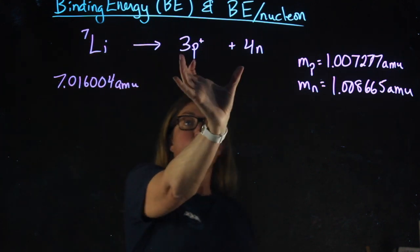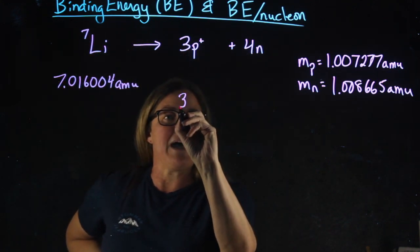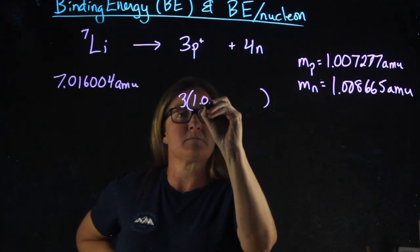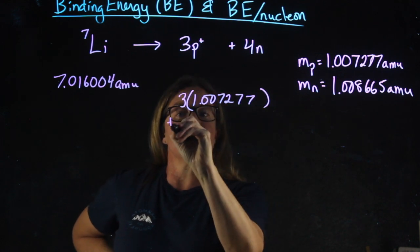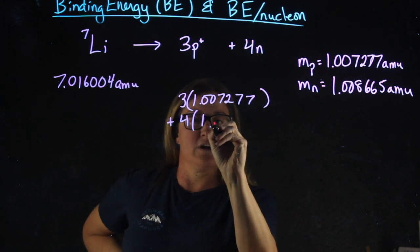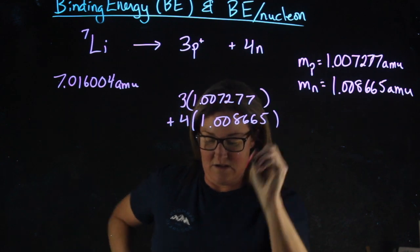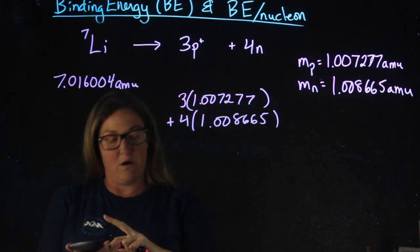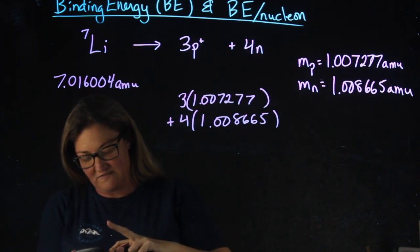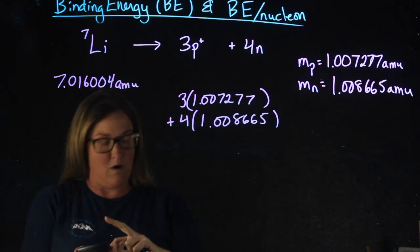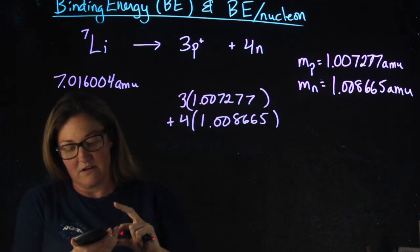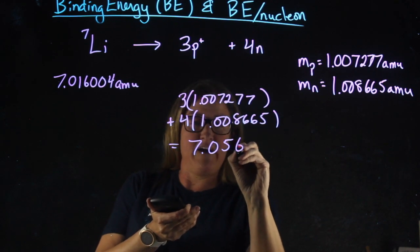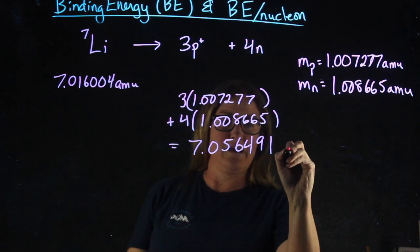When we break lithium-7 apart, to find the total mass, I'm going to calculate three times the mass of a proton plus four times the mass of a neutron. Three times 1.007277 plus four times 1.008665 gives me 7.056491 amu.